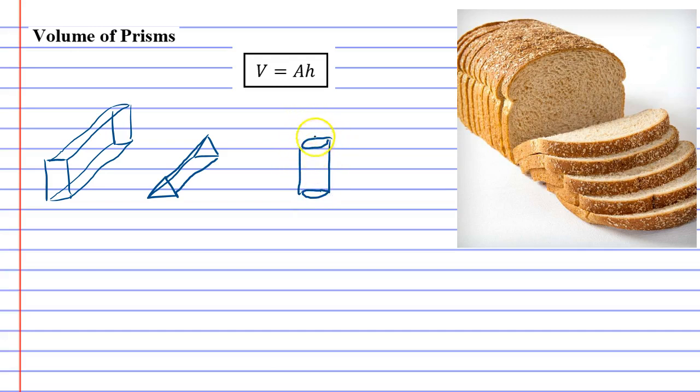So this is called a cylinder, but you could also say it's a circular prism. This is a triangular prism, and this is a rectangular prism.